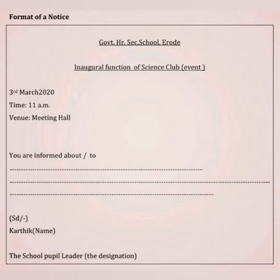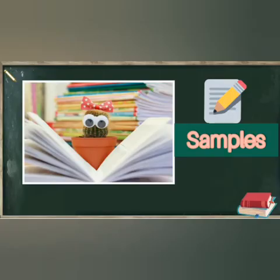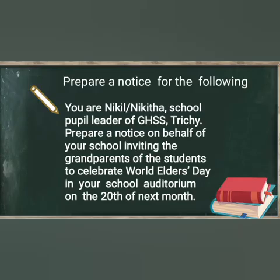The format of the notice includes: first the title, then the purpose for which the notice is organized, then the date and time — 'when' must be included. Then 'You are informed,' followed by the content. Below that, the school representative or leader designation should be mentioned, and you have to sign there. Now we are going to see some examples.